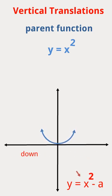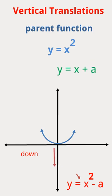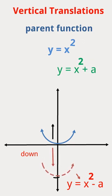When the equation is given by y equals x squared plus a, there will be a shift in the parent graph upward by a units.